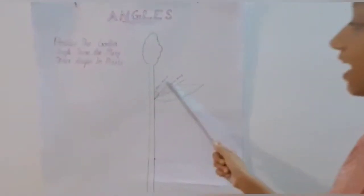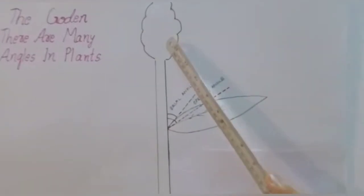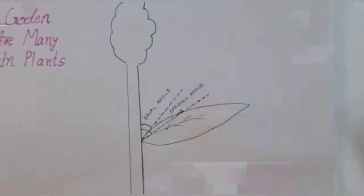The same thing I am showing in this diagram. The angle between stem and leaf is basal angle and the angle between stem and tip of leaf blade is opening angle.